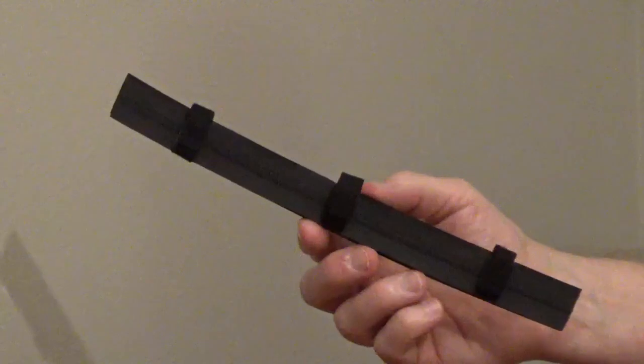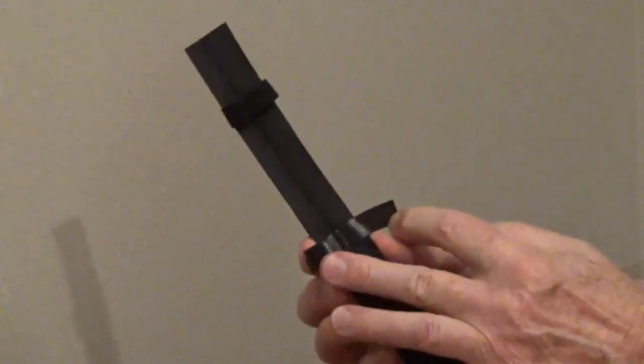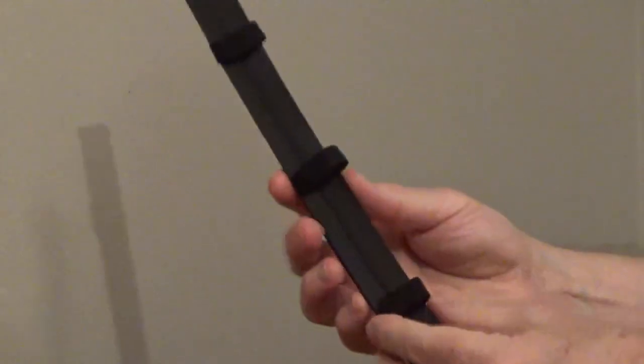The top half of the mounting strip has individual hook-and-loop straps every three inches to hold lights and cords up to a half-inch in diameter.